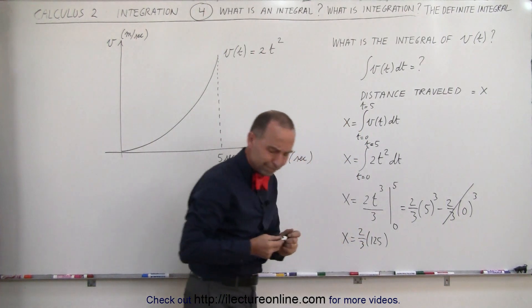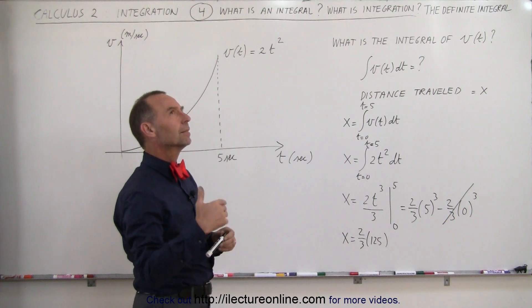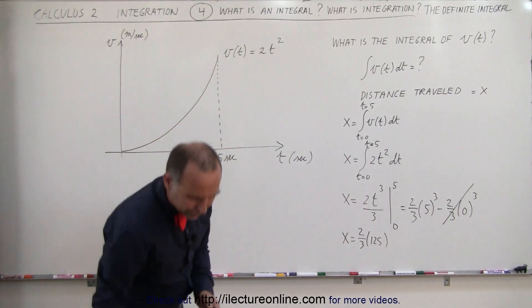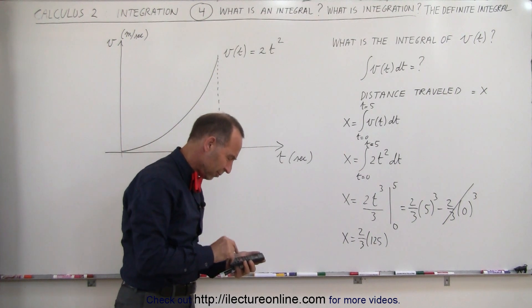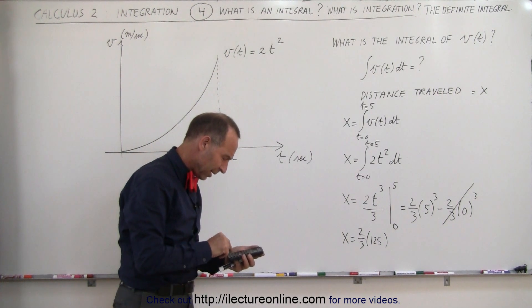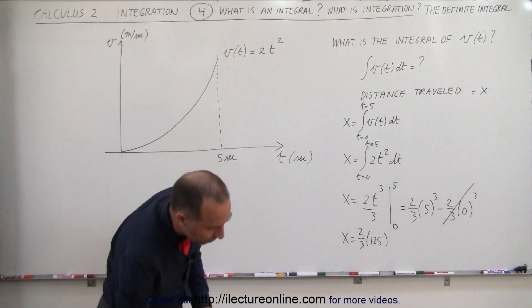And that's 250 divided by 3. Let me get a calculator out. 250 divided by 3 equals 83.3.